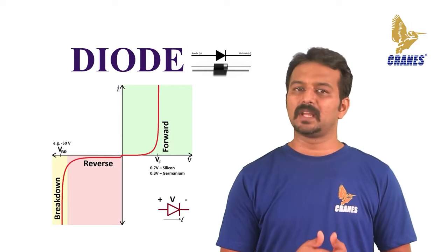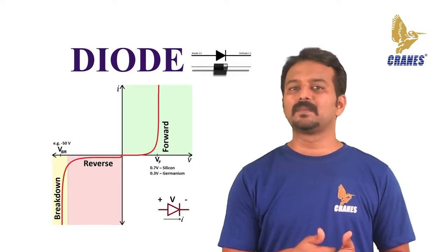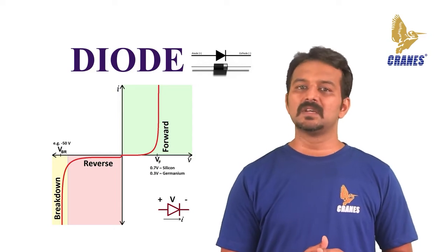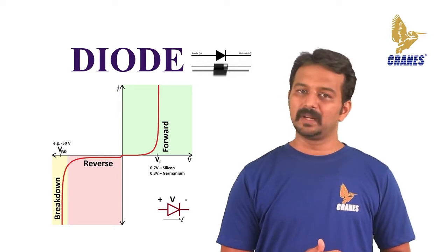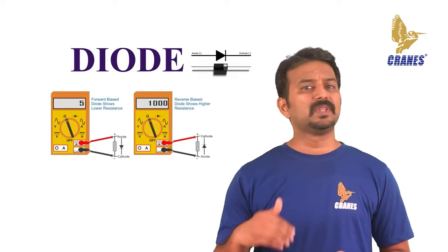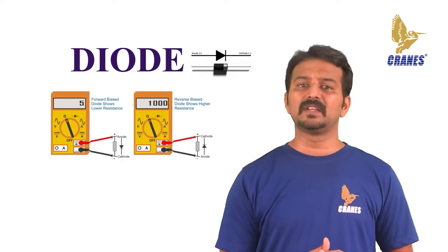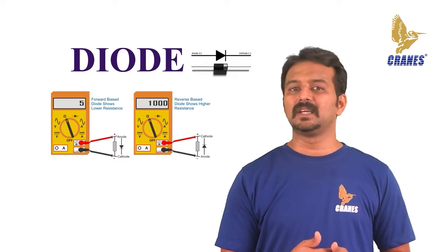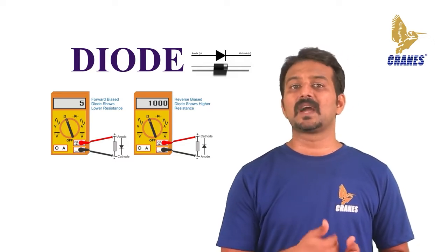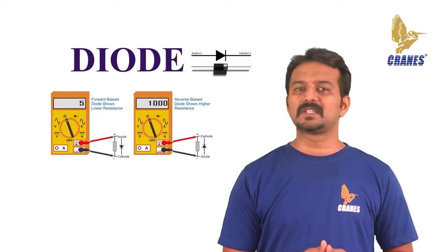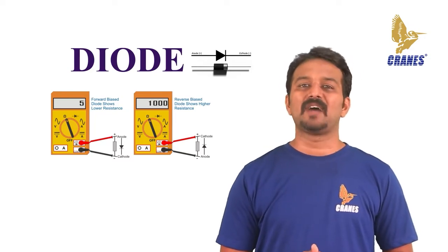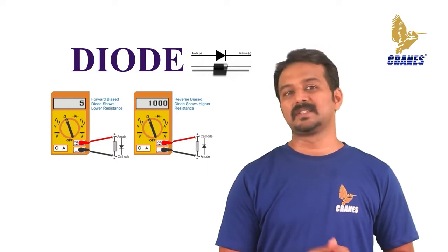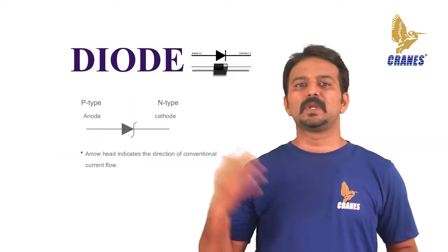The diode only blocks current in the reverse direction while the reverse biased voltage is within a specified range, above which the reverse barrier breaks. The voltage at which breakdown occurs is called the reverse breakdown voltage. When the circuit voltage is higher than the reverse breakdown voltage, the diode is able to conduct electricity in the reverse direction. This is why in practice we say diodes have high resistance in the reverse direction, not infinite resistance.